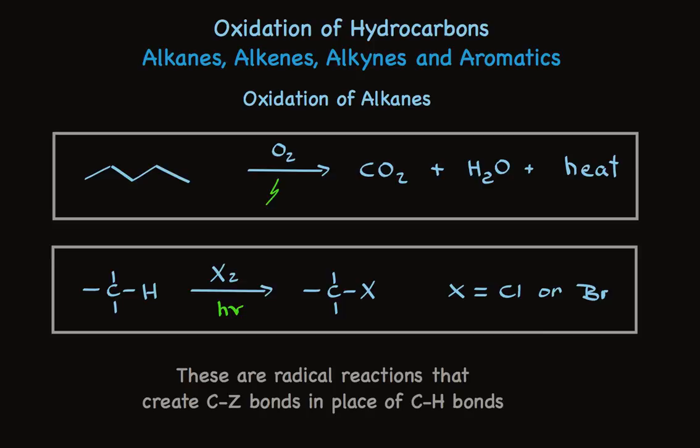We can conclude that the chemistry of alkanes is a chemistry of oxidation. And it turns out these are both radical reactions that create CZ bonds in place of CH bonds to make the oxidation occur. In separate videos, I'll talk extensively about the radical reaction of CH bonds with halogens. For now, it's simply sufficient to know that alkanes undergo two oxidation reactions, combustion and halogenation.